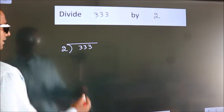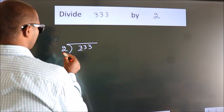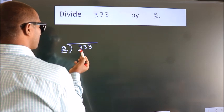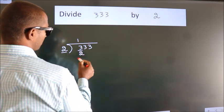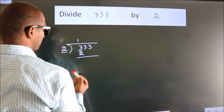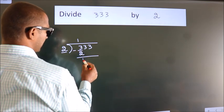Next, here we have 3, here 2. A number close to 3 in the 2 table is 2 ones, 2. Now, we should subtract. We get 1.